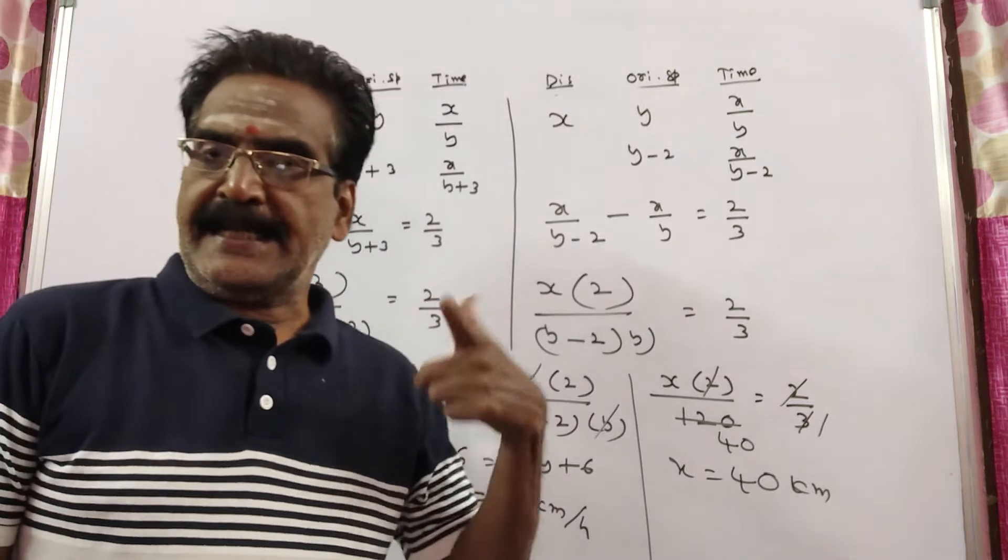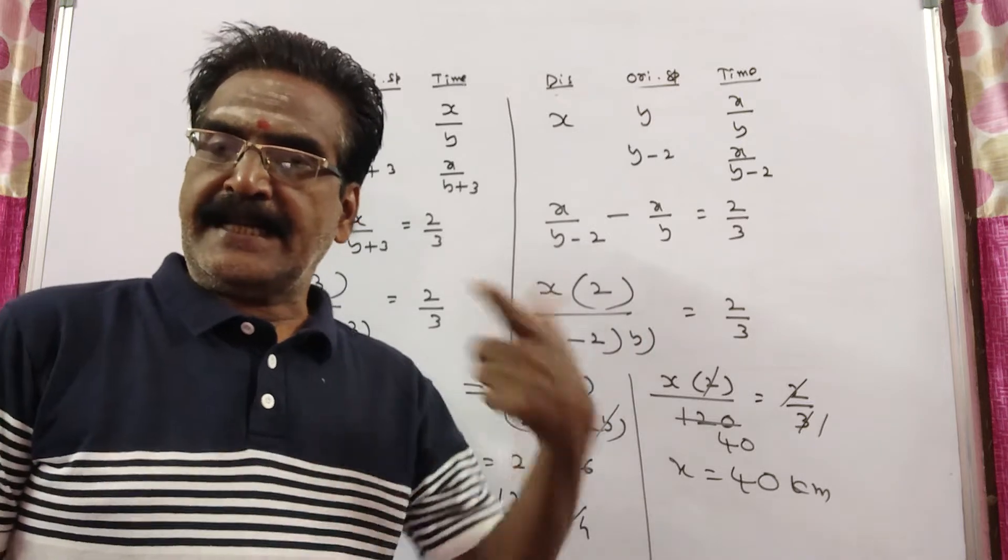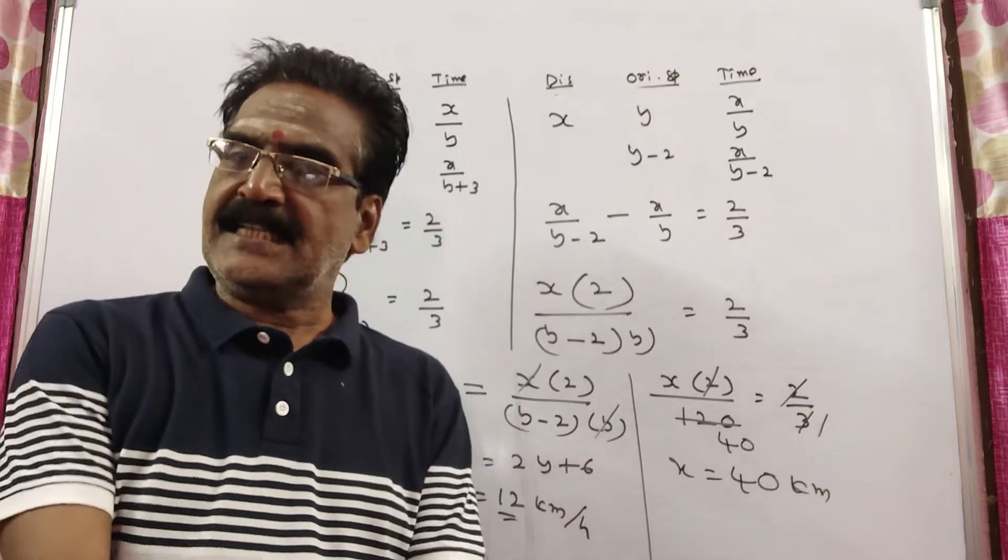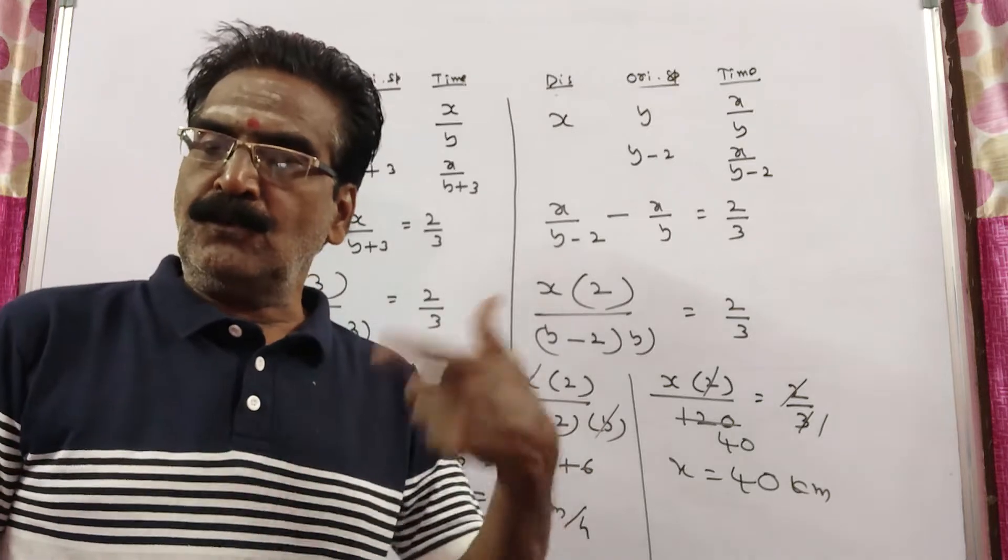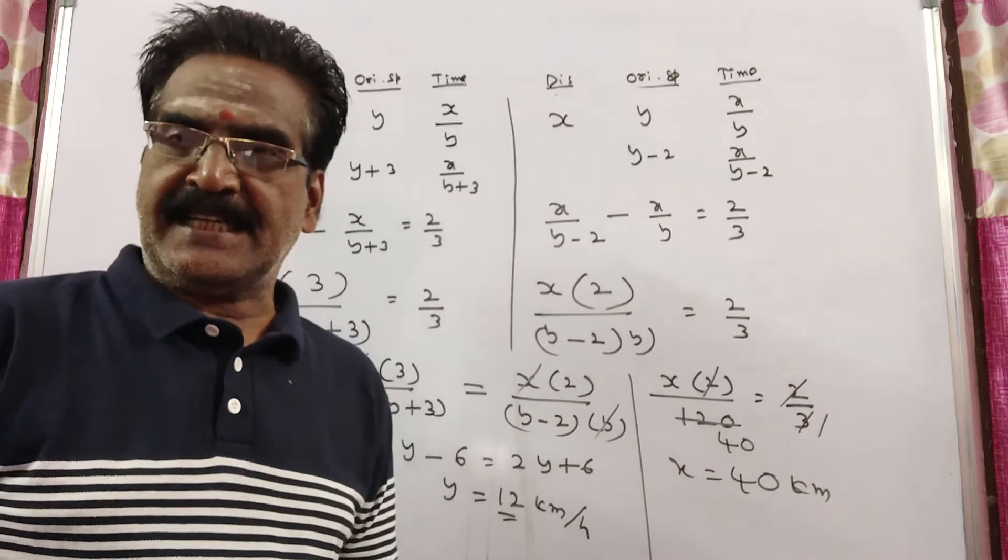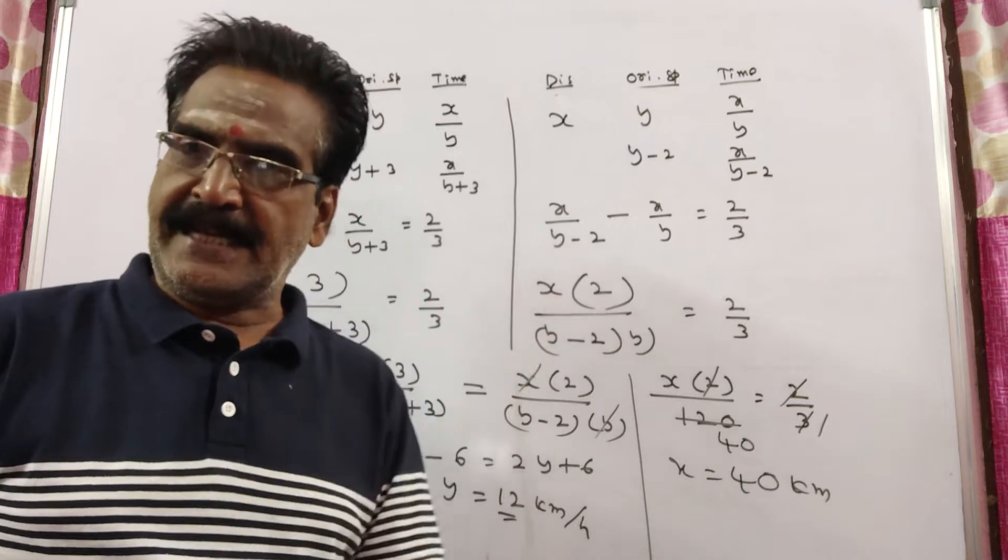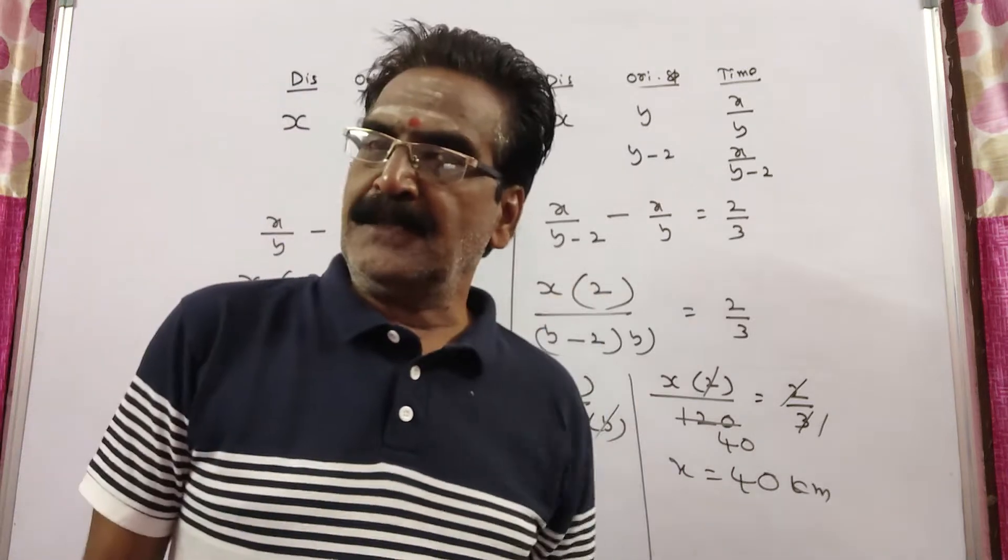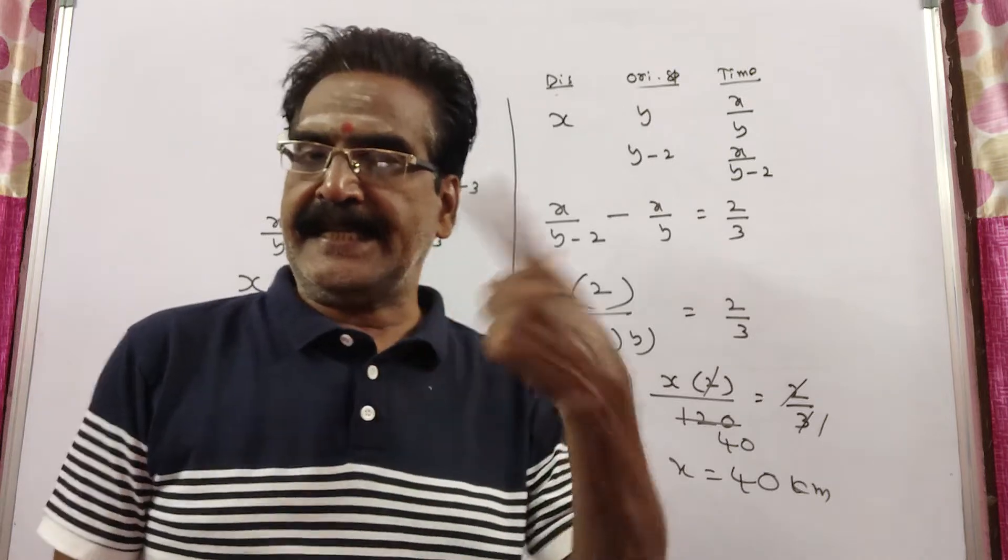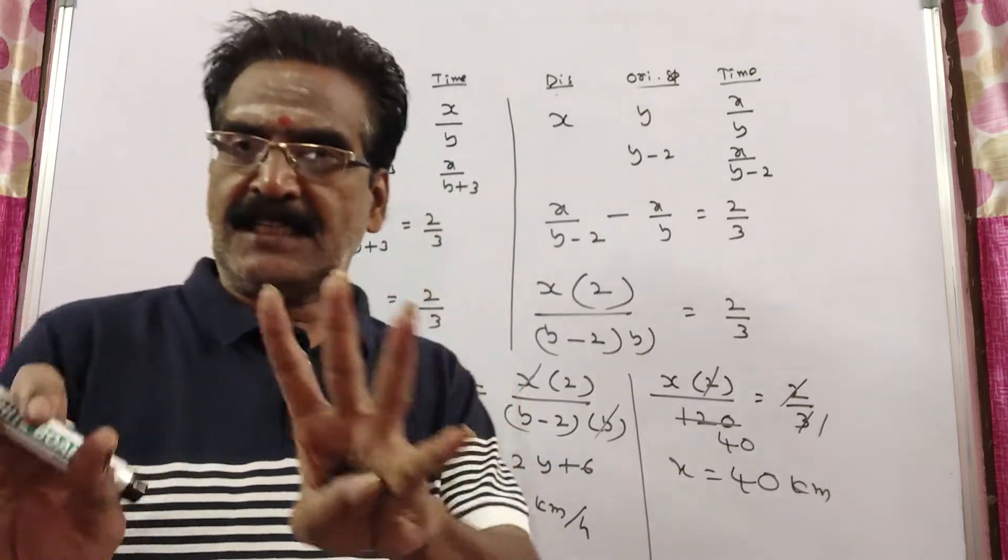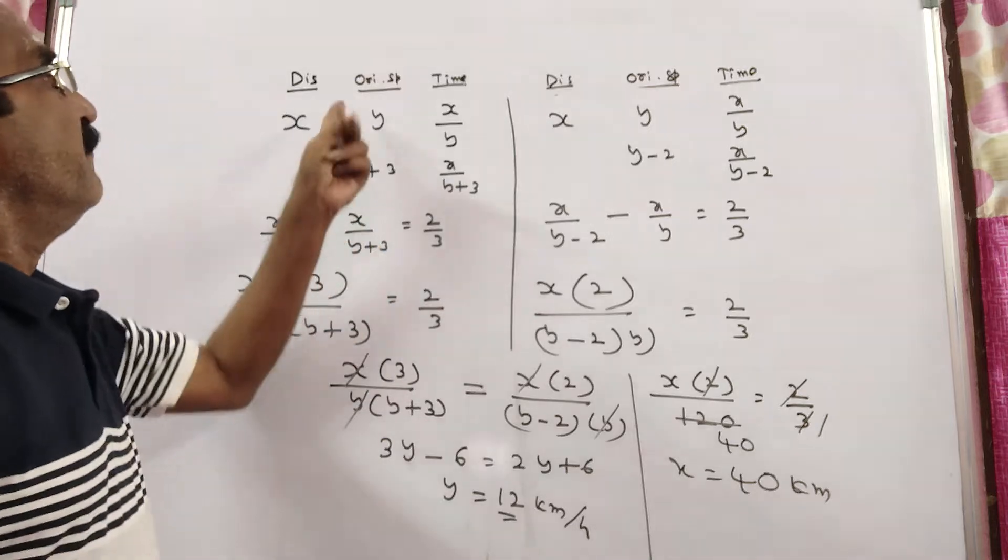See friends, a train covered a certain distance at a certain speed. If it had moved 3 km/h faster, it takes 40 minutes less, and if it moves 2 km/h slower, it takes 40 minutes more. Then what is the distance?